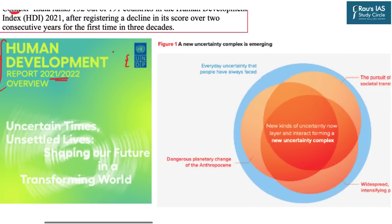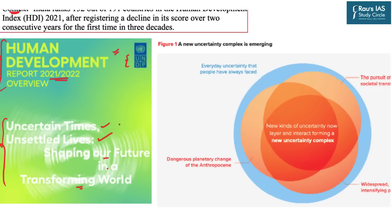This is the front page of the report. It is important because it mentions the title or the basic theme of this report, which is: 'Uncertain Times, Unsettled Lives: Shaping Our Future in a Transforming World.' This theme is very important because it reflects a problematic situation which the world is going through, indicated by the uncertain times and unsettled lives.